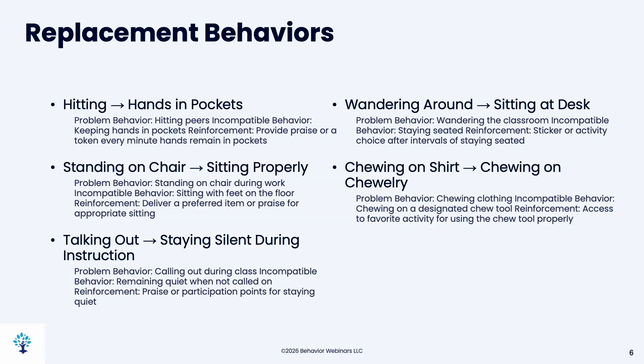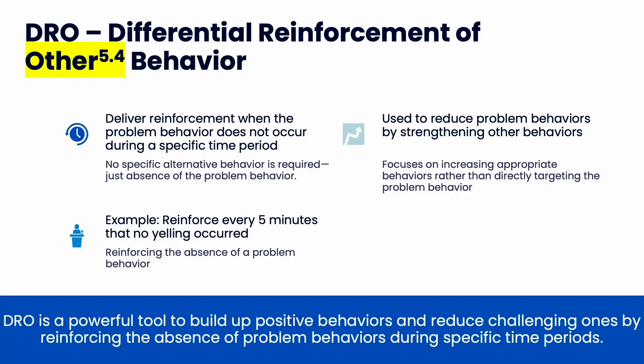With DRI, you physically cannot do the problem behavior and the replacement behavior at the same time. Our last type in this section is DRO — differential reinforcement of other behavior. What you do is deliver reinforcement when the problem behavior does not occur during a specific time period. The 'other' means anything but the problem behavior. No specific alternative behavior is required. For example, reinforce every five minutes that no yelling occurred — you're reinforcing the absence of yelling. It's used to reduce problem behaviors and strengthen other behaviors.